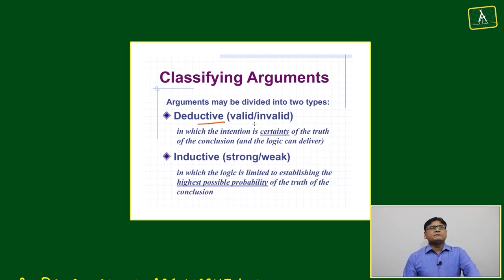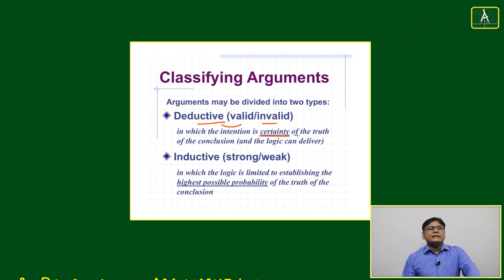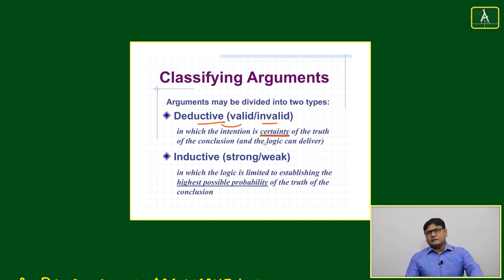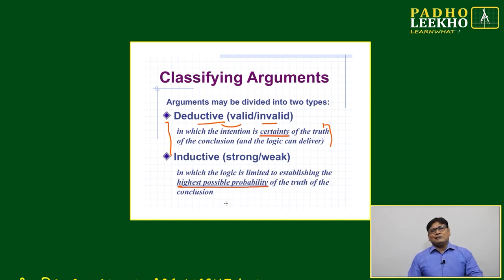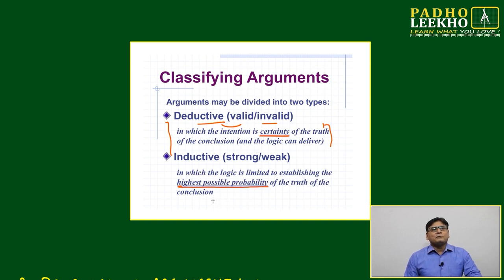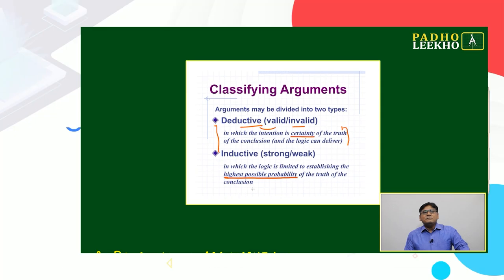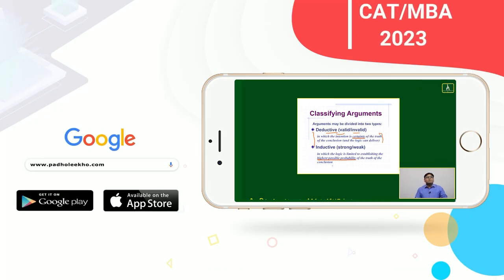Classifying arguments: they may be divided into two types — deductive, which goes toward valid and invalid, where the intention is certainty of the truth of the conclusion; and inductive, which is strong and weak, where the logic is limited to establishing the highest possible probability of the truth of the conclusion. We are not going to check whether the conclusion is certainly true or not — just the highest possible probability.